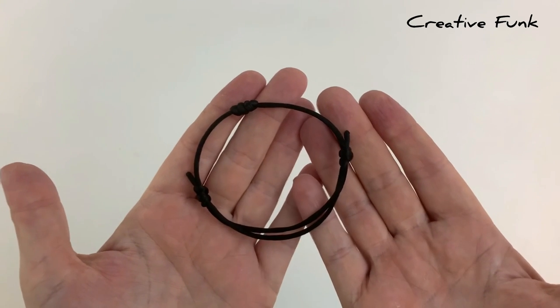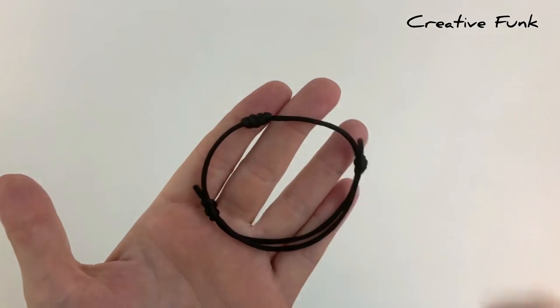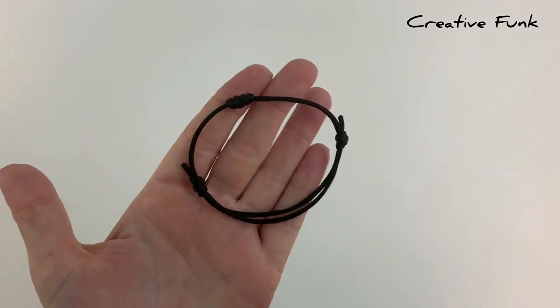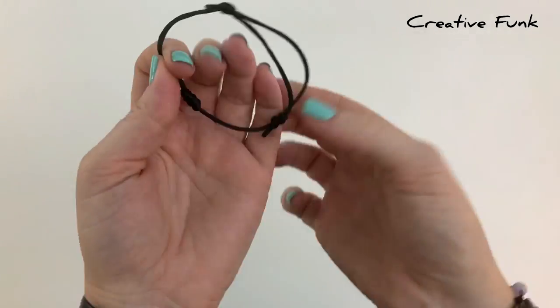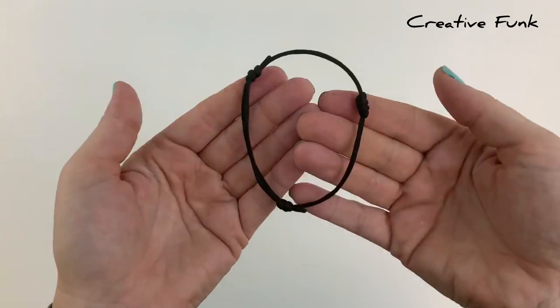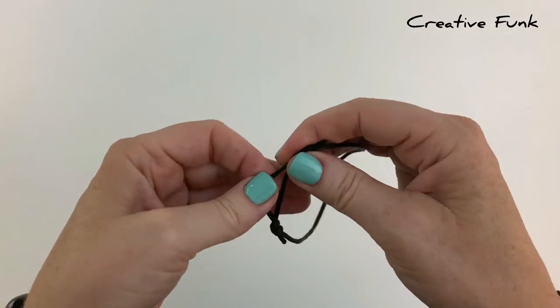In this video we're making a simple sliding knot bracelet with barrel knot detail. This design has that barrel knot right in the center and two sliding knots, one on each side, so that you can adjust the size of your bracelet.